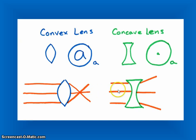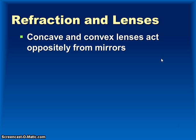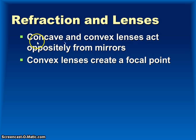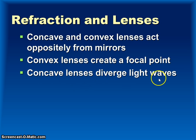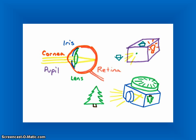In a concave lens, when light comes through, it disperses or separates out, which is what makes the object appear smaller. Concave and convex lenses act oppositely from their mirror counterparts. Concave lenses disperse light and make light waves diverge, while convex lenses make the light come to a focal point. So convex lenses create a focal point, and concave lenses diverge light waves, making them spread farther apart.